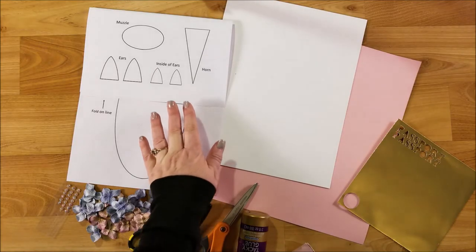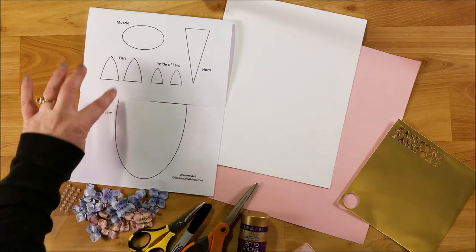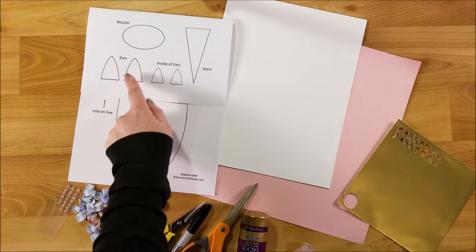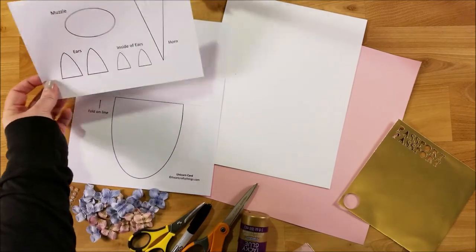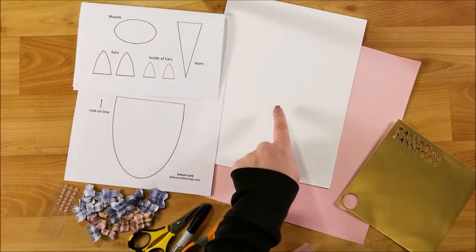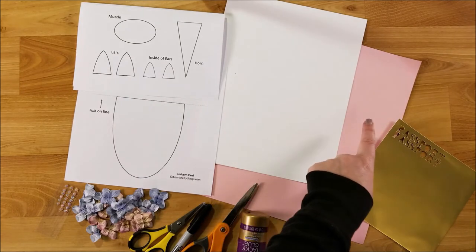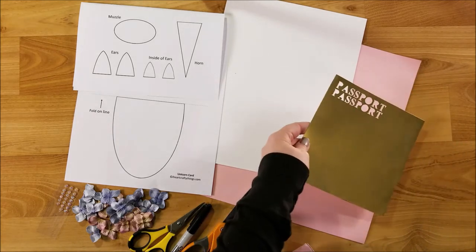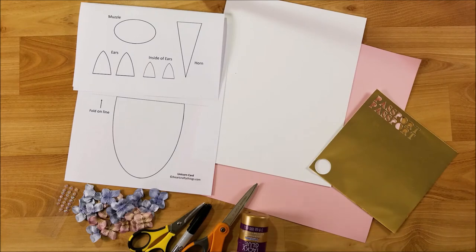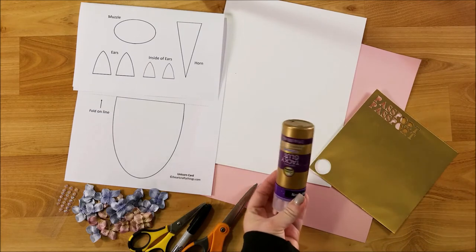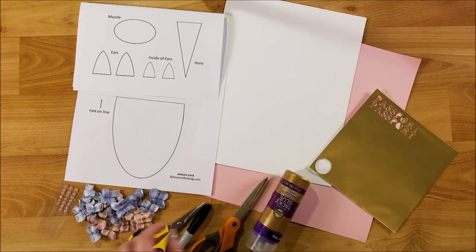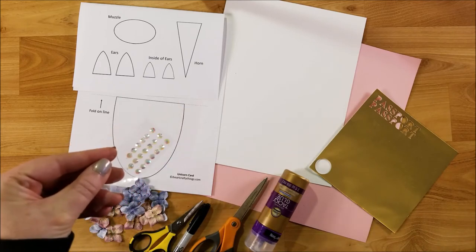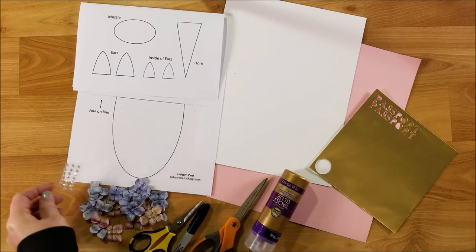For the unicorn card, you will want to print out the first two pieces of the template, which is the head and the muzzle, horn, inside of the ears, and the outside of the ears. That's like pages one and two. You'll need one piece of white cardstock, a piece of pink cardstock, a piece of gold or yellow cardstock for the horn. I don't need that for right now. Some tacky glue, scissors to cut out some paper flowers, and something for the center of your flowers. I have the iridescent rhinestones here.